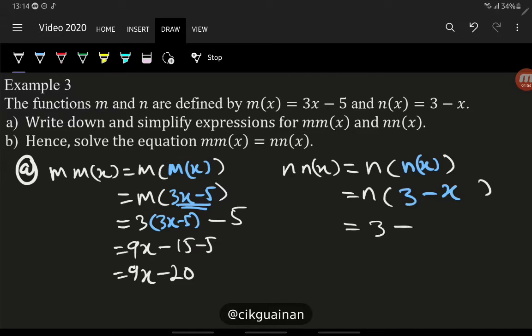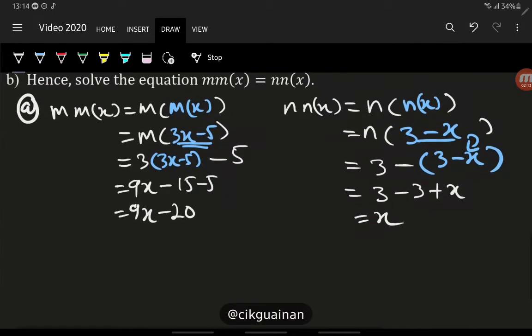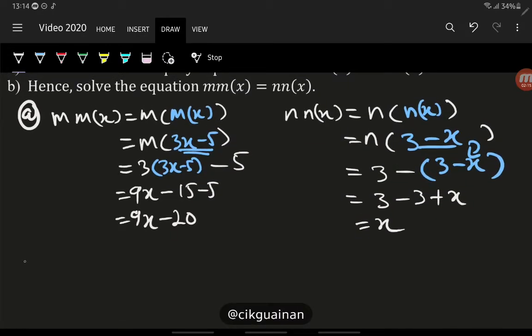But this x is changed into 3 minus x. This one, bring down here and then we simplify them: 3 minus (3 - x), so we have x. Right, okay. Now let's go for the second one.